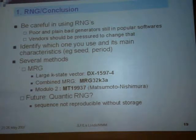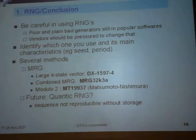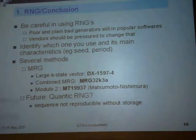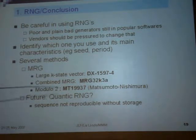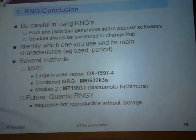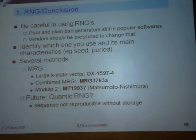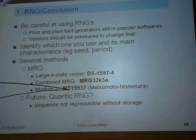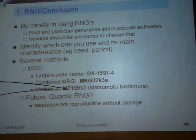You have seen several methods: Large A-State vector, Diamond 2, combined generator, and there is another one I did not talk about — Modulo 2, the so-called Mersenne Twister by Matsumoto and Nishimura. This is also a very good one. The problem is to be careful with the seed. This is probably the one used by default in R, as far as I know.